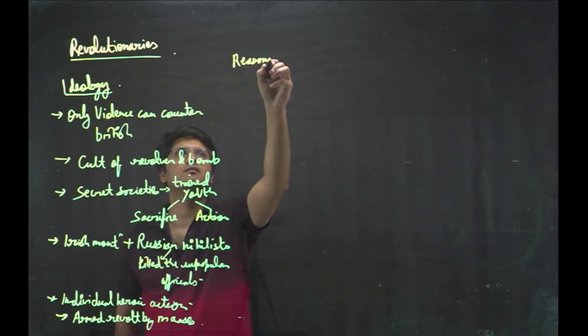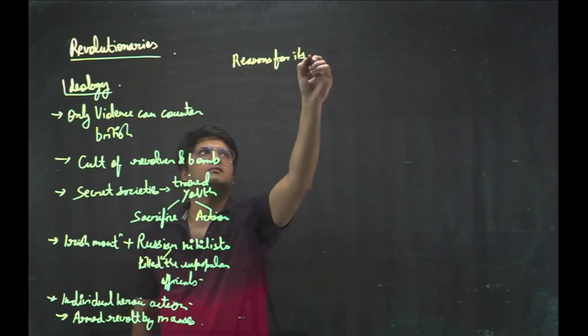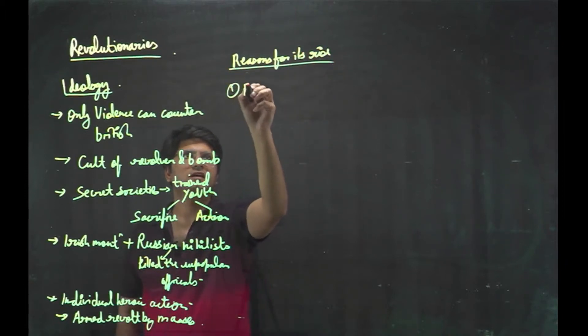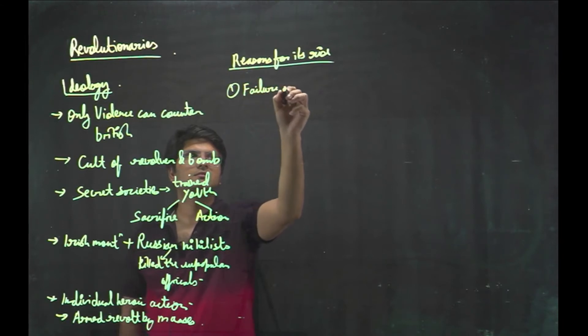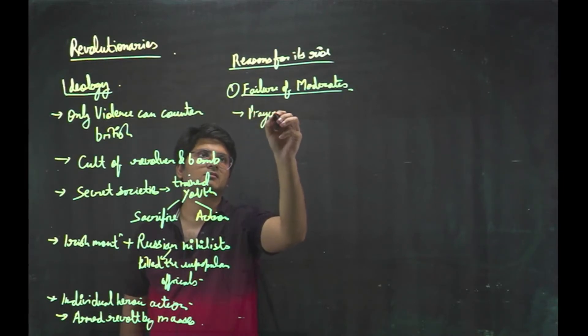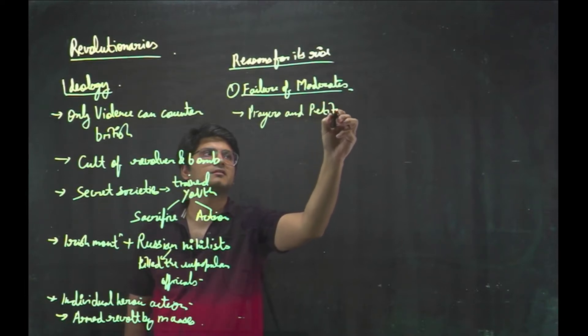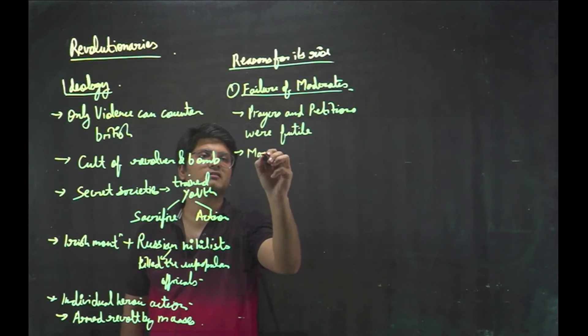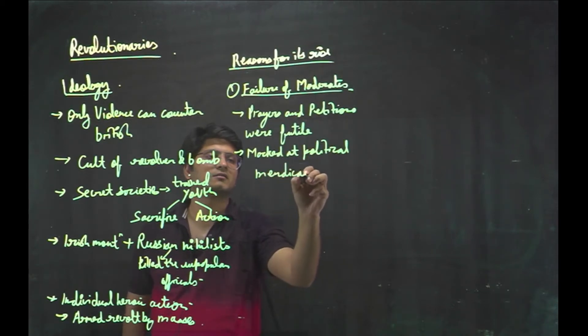Reasons for its rise. Failure of moderates - method of prayers and petitions were futile. These revolutionaries mocked that political mendicancy.